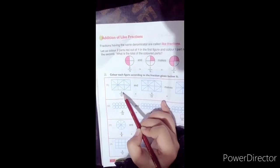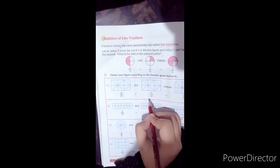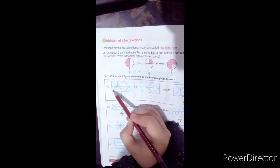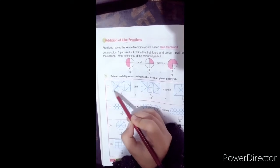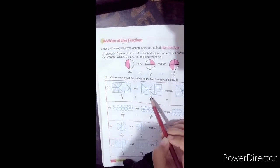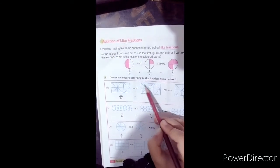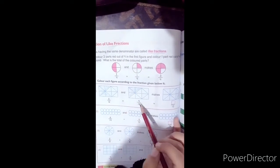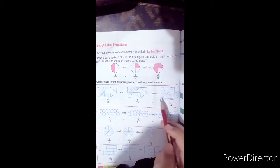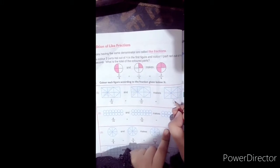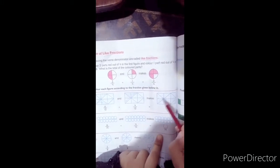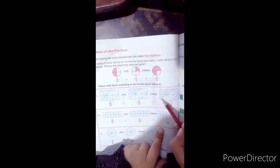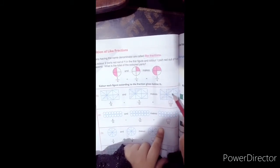I have learned this in previous lecture. 6 by 12, 4 by 12. 6 and 4 make 10 out of 12. Then we will color the same blocks. We will color 10.